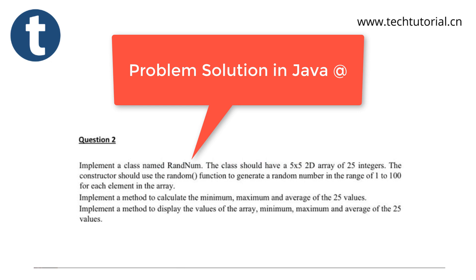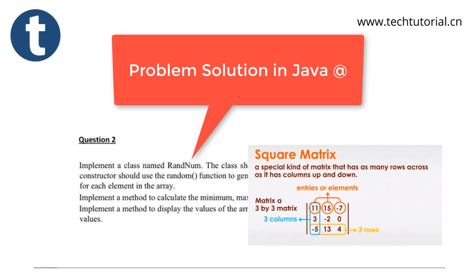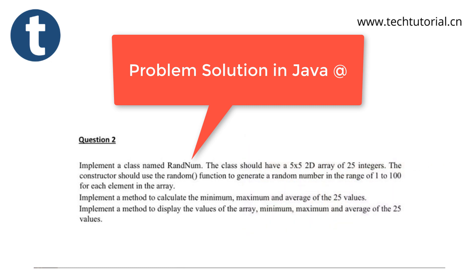Let's check the question. The question was: implement a class named RandomNumber. The class should have a 5 times 5 2D array of 25 integers. This kind of array is called a square matrix. A square matrix is a matrix that has the same number of rows and columns — it's called n times n. The constructor should use the random function to generate random numbers in the range of 1 to 100 for each element in the array.